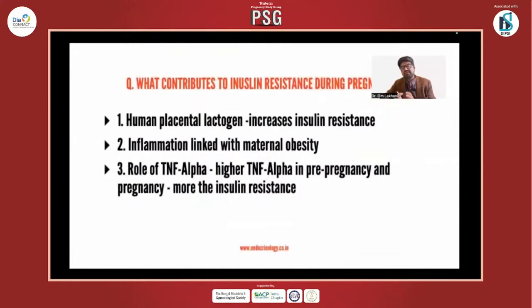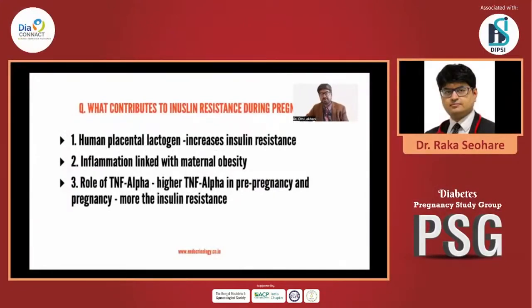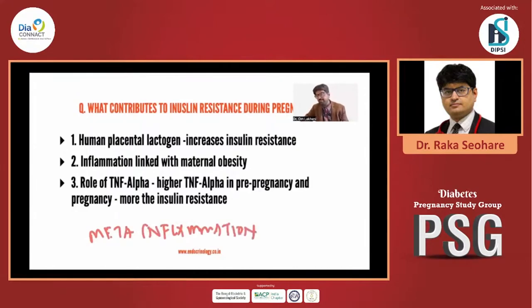Insulin resistance increases during pregnancy in all forms of pregnancy. Why does this happen? There are many theories. One is that a hormone called human placental lactogen is known to increase insulin resistance, and this may explain the increased insulin resistance during pregnancy. It could also be because of inflammation — there is a developing concept known as meta-inflammation, which is inflammation involving all organs of the body, often associated with obesity and ectopic fat. So it could be meta-inflammation due to maternal obesity. And then perhaps the role of TNF-alpha — higher TNF-alpha in the pre-pregnancy state is associated with more insulin resistance during pregnancy. The first factor is common to all women, both obese and non-obese, while the latter two are associated with obese women at higher risk of gestational diabetes.